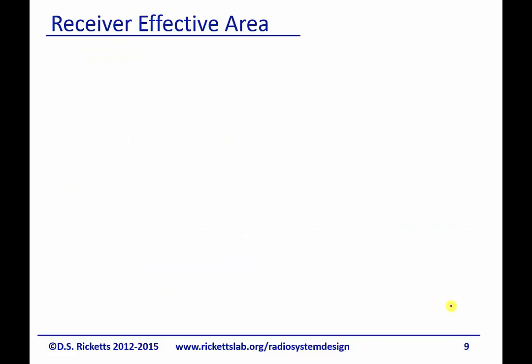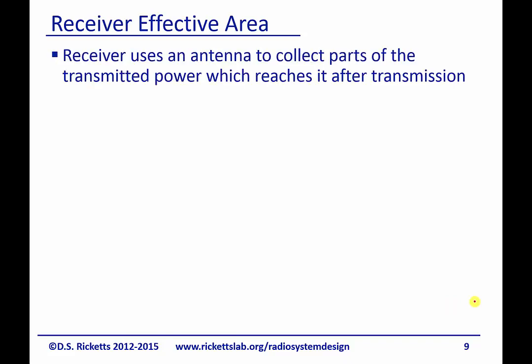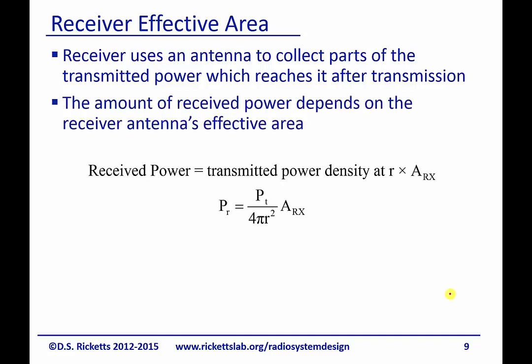Now, when we talk about receivers, a transmitting antenna and receiving antenna are both linear systems and they're both can be a dual of one another. So that means everything we said about a transmitting antenna, we could say about a receiving antenna. But when we start to think about physically what's going on, it takes a little bit of thinking to see how we could take the gain of a transmitting antenna and reverse it to receiver. So what we do is we use a slightly different concept and that is called the receiver effective area. The receiver uses an antenna to collect the parts of a transmitted power which reaches it after transmission. The amount of received power depends on the receiver's effective area. And this is oftentimes called the aperture.